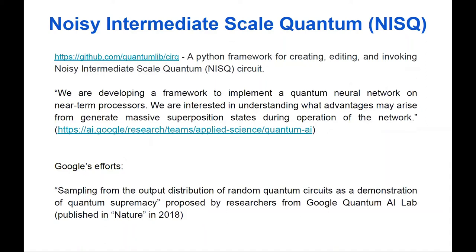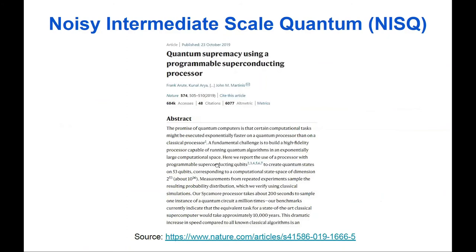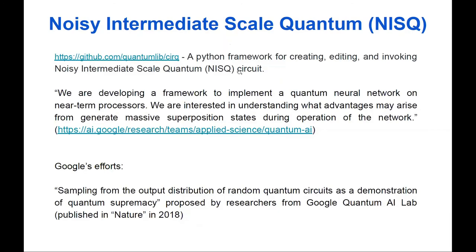There are approaches to deal with noise and imperfect quantum computers, such as NISQ — Noisy Intermediate-Scale Quantum circuits — and a Python framework for developing such circuits called Cirq, released by Google. This noise and randomness were partially related to the recent demonstration of quantum supremacy. Google researchers, in a paper from 2018, claimed that the output distribution of random quantum circuits could demonstrate quantum supremacy, and proved it in 2019 in the paper 'Quantum Supremacy Using a Programmable Superconducting Processor.'